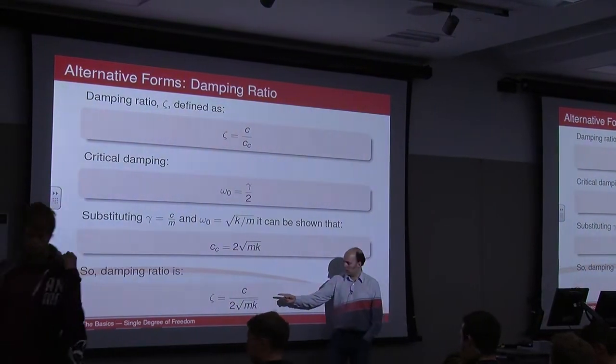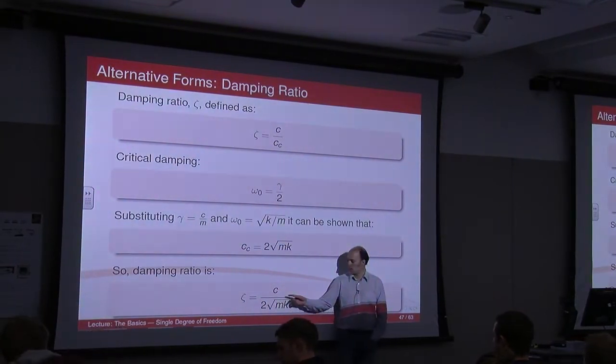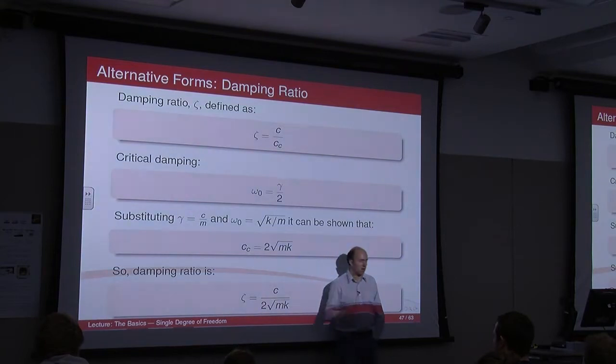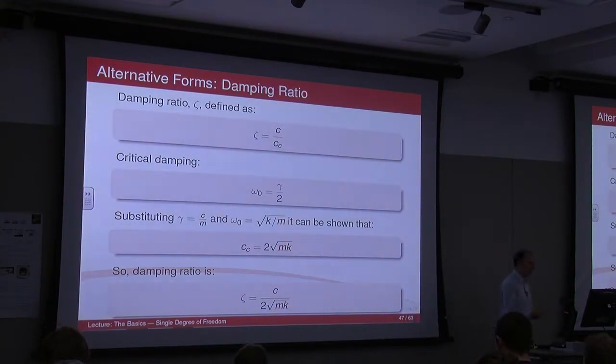If it's under 1, we know we have what's known as underdamping. But if it's over 1 we have an overdamped system, and if it's equal to 1 we've got critical damping. So it's quite a quick way to show what sort of damping we've got in the system.